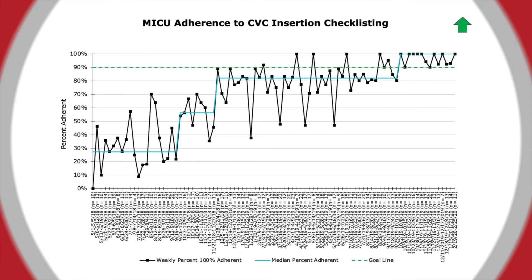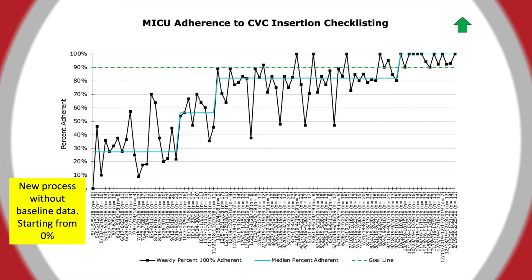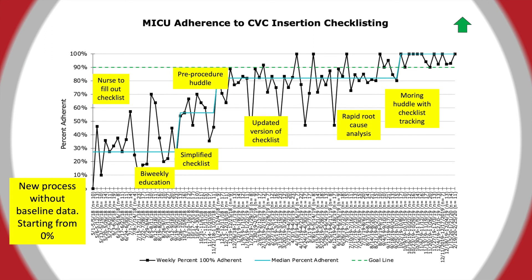This last chart shows percent adherence to use of a checklist when inserting central lines in the MICU. This was a new process without any baseline data. The team started plotting data as soon as the project started and throughout the PDSA cycles. In a new project, we can expect rapidly changing values. Each time the team observed eight data points above the previous centerline, a new centerline was calculated. The annotations describe the interventions over time, concisely telling the improvement story.